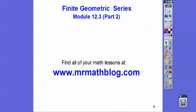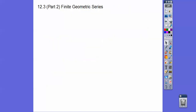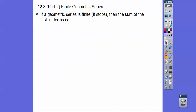This lesson is on geometric series, or finite geometric series. We'll do infinite geometric series in the next lesson. Finite means it stops. So here's our question: how do we find the sum of a finite geometric series? Series have plus signs in between them. If a geometric series is finite, the sum of its first n terms can be found by this formula: the first term — that's a sub 1 — times the quantity 1 minus r to the n, over 1 minus r.